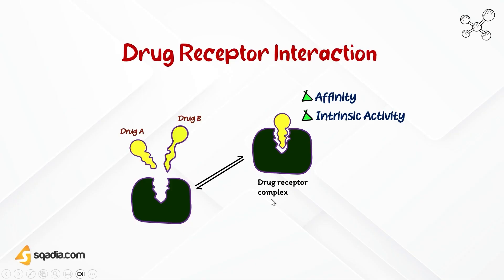Drugs possess properties such as affinity and intrinsic activity. Affinity refers to the drug's ability to bind with the receptor and form a drug-receptor complex. If a drug can bind with the receptor, it has affinity for that receptor. On the other hand, if a drug cannot bind with the receptor, it lacks affinity for that receptor.